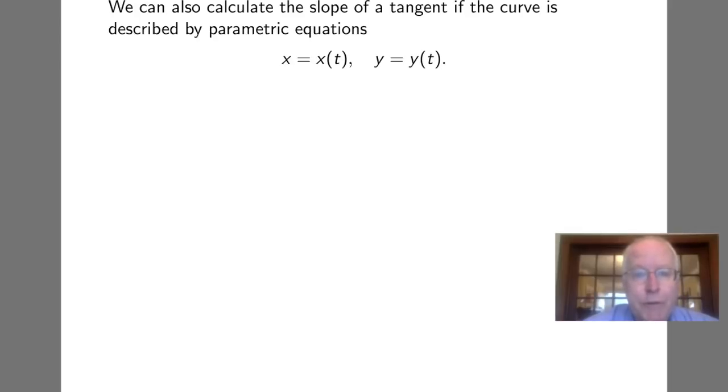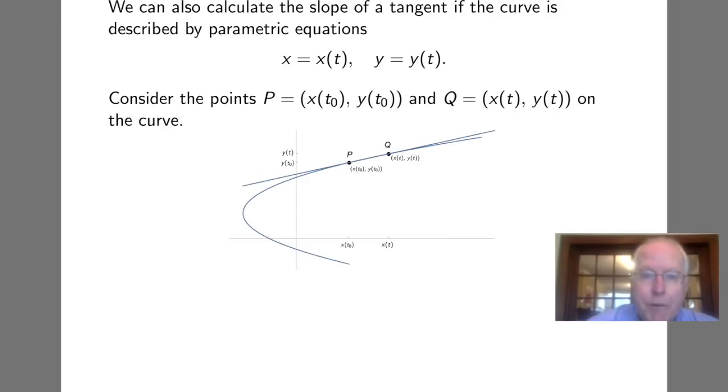We can also calculate the slope of a tangent if the curve is described by parametric equations. We're going to use a method very similar to that seen in Calculus 1. We consider two points on the curve: point P equals (x(t₀), y(t₀)) and another point Q with coordinates (x(t), y(t)). Now we're going to look for the tangent at point P and we will let point Q vary and take a limit that brings us to an expression for the slope of the tangent.